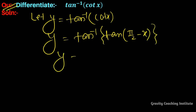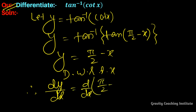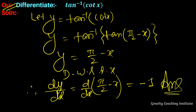So y equals pi by 2 minus x. Differentiating with respect to x, dy upon dx equals the derivative of pi by 2 minus x. Pi by 2 is a constant, so its derivative is 0, and the derivative of x is 1, giving the answer minus 1.